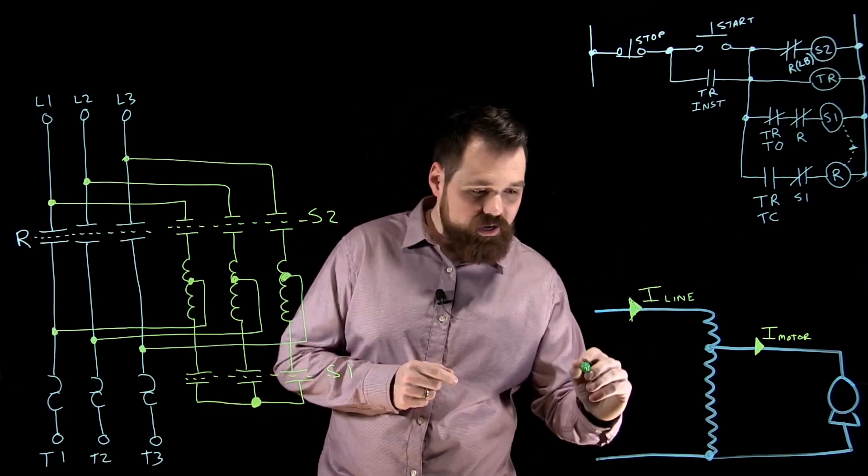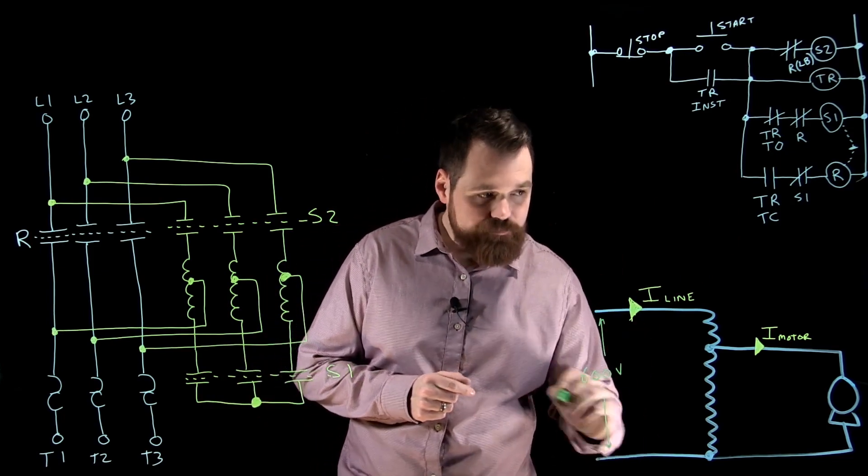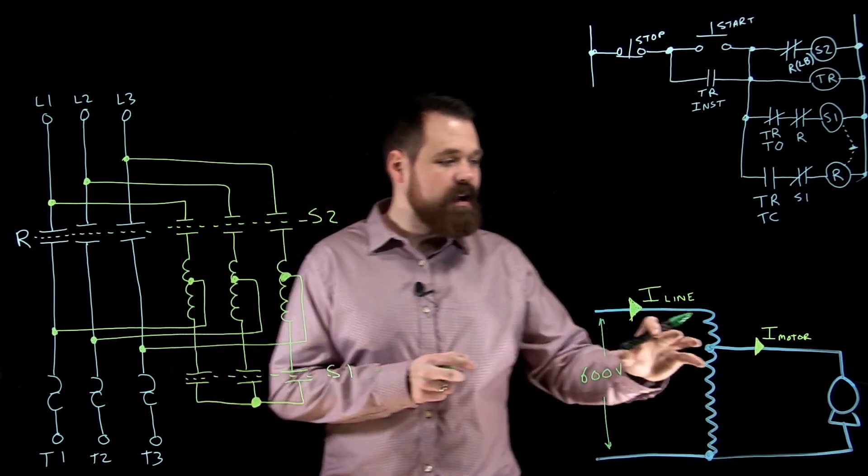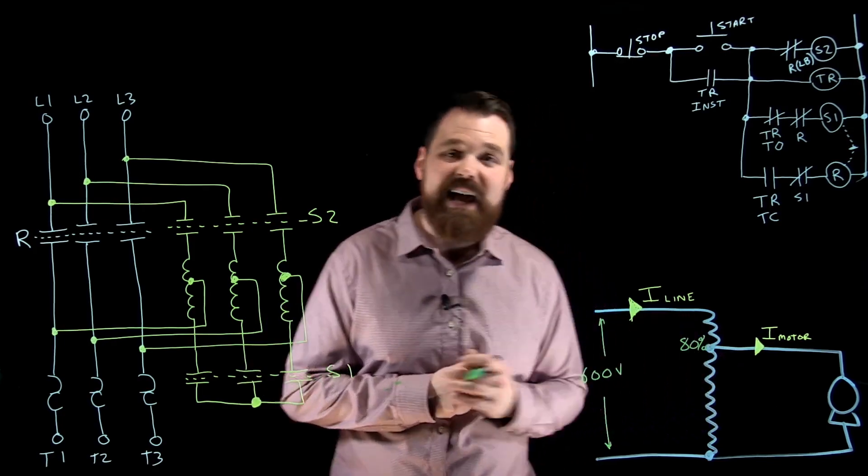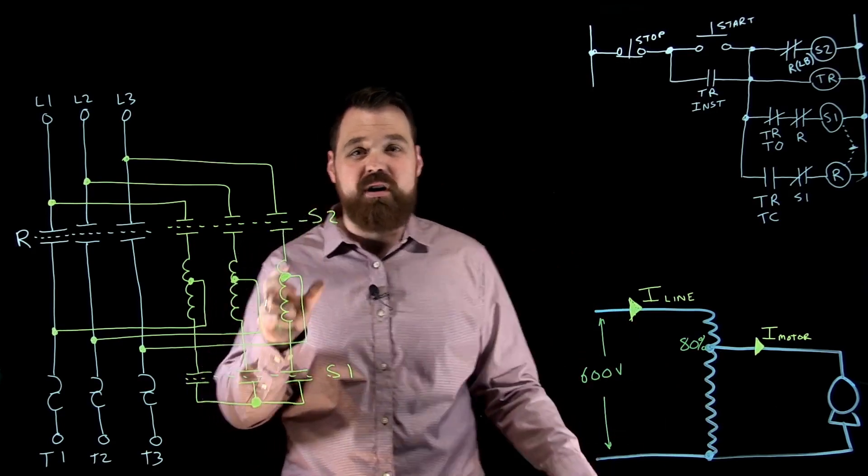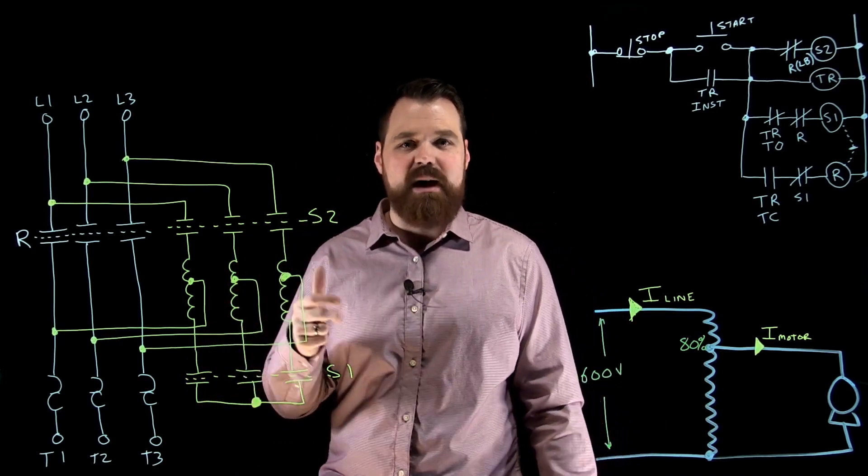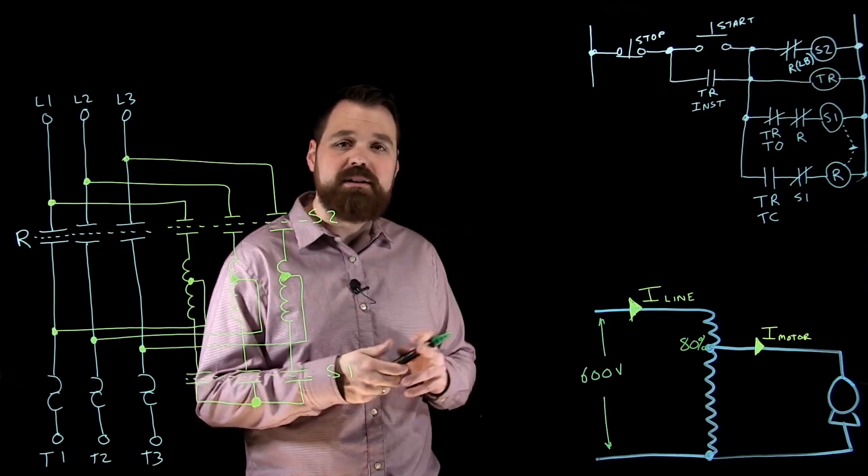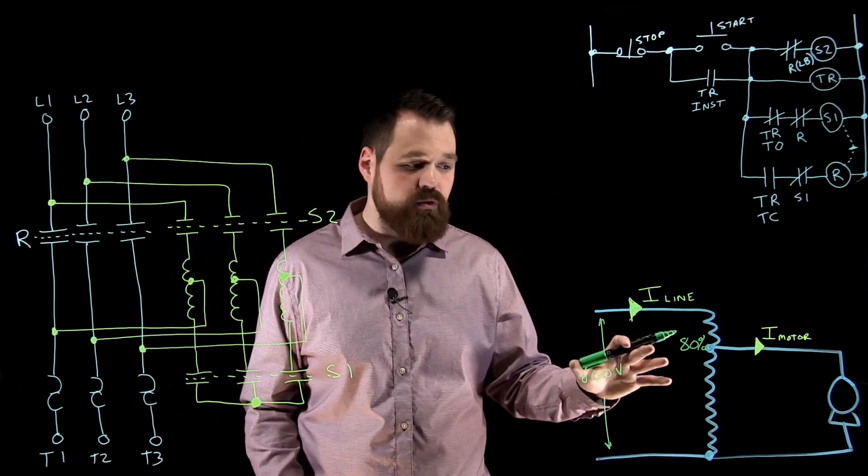Let's look at this. Hypothetically, if I had a 600 volt source and I'm using the 80% tap on the autotransformer. The common taps are 50%, 65%, and 80%—those are the three taps you usually choose between, but it depends.